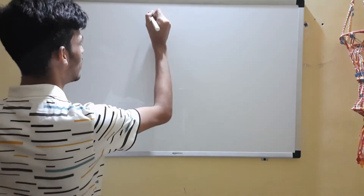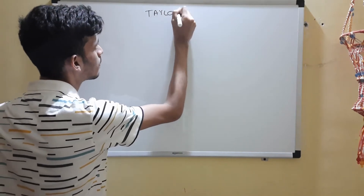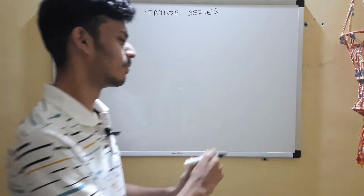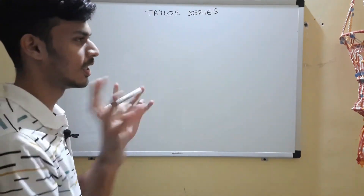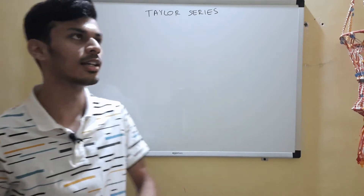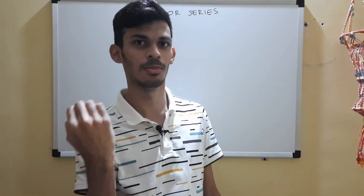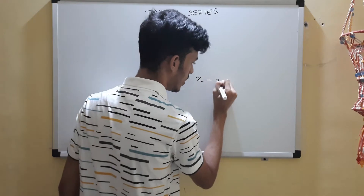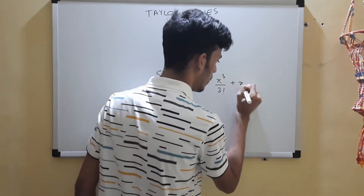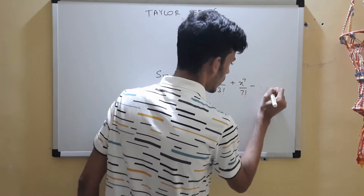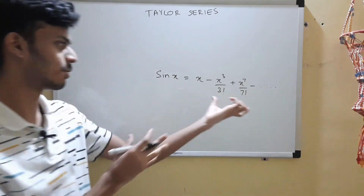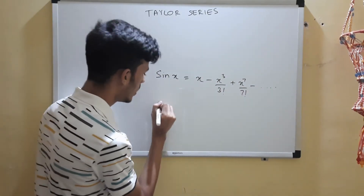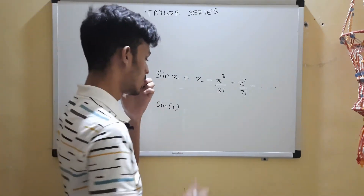If you had a hard time remembering those series, this lecture will be a bliss to you. For those who don't know what Taylor series is — loosely stated, not going into the full mathematical aspect — it's a way of expressing a non-polynomial function as a polynomial function. For example, the Taylor series of sine x is x minus x cubed upon 3 factorial, and so on. We equate a non-polynomial function like sine x to its polynomial expression.